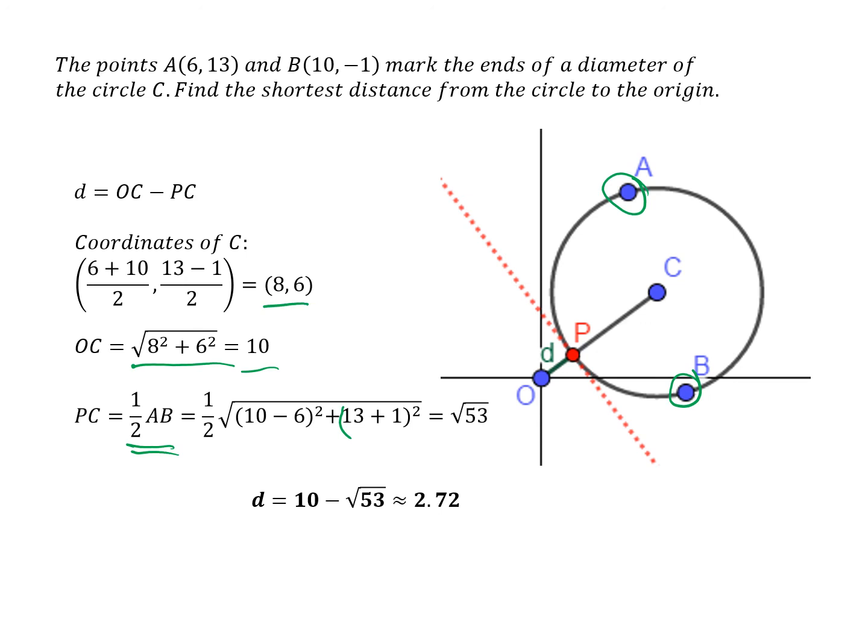So putting that all together gives us d is 10 minus the square root of 53, which is approximately 2.72.